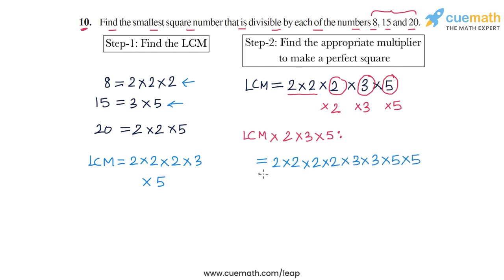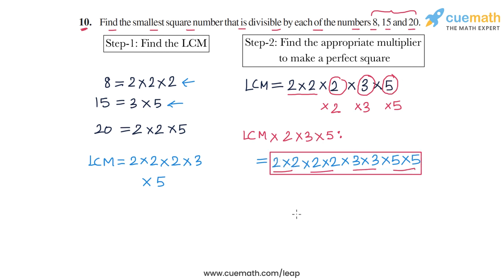Now this is a perfect square because all the prime factors can be paired up. So the smallest number that is not just a multiple of 8, 15, and 20, but is also a perfect square, is this number — and this is our answer.